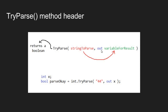We can think of the out keyword as saying: I'm passing a variable into the method, but I want that variable to hold the output of the method. So the TryParse method, instead of returning the parsed integer or numeric value directly, is going to take this string and try to parse it into a numeric data type and store it in that variable. TryParse is also going to return a Boolean value.